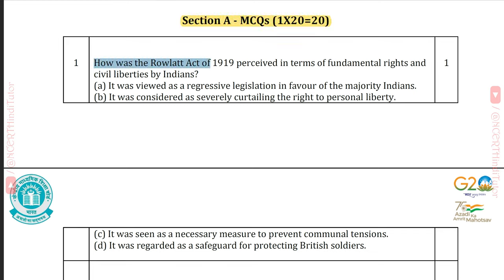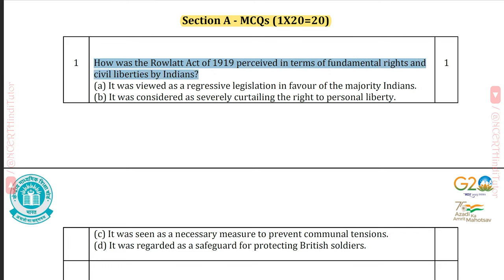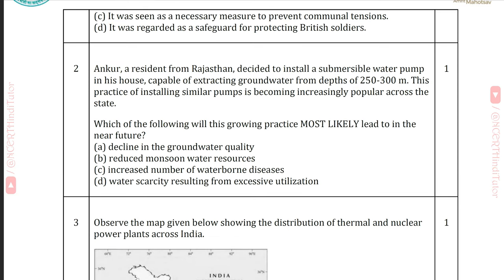Question 1: How was the Rowlatt Act of 1919 perceived in terms of fundamental rights and civil liberties by Indians? Answer B: It was considered as severely curtailing the right to personal liberty.